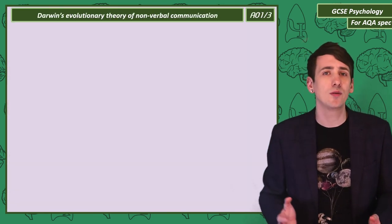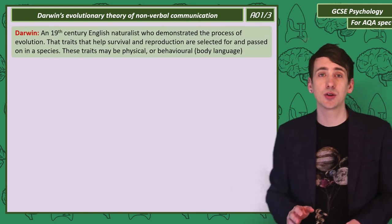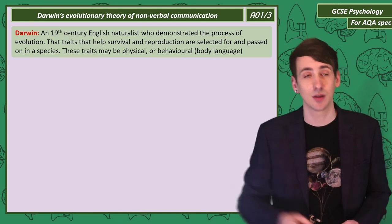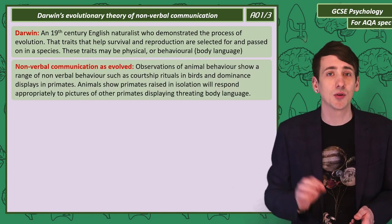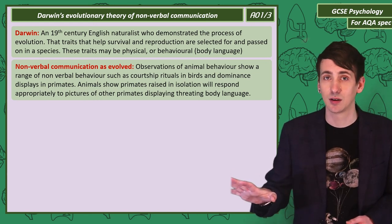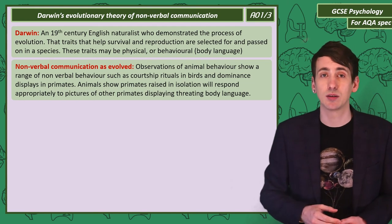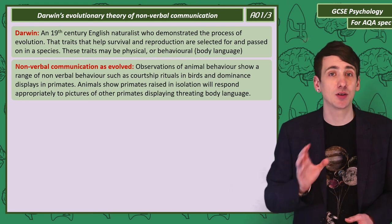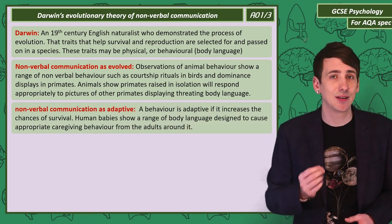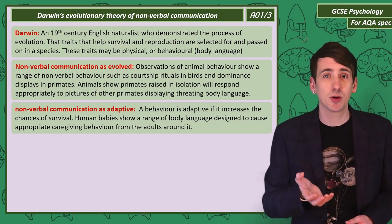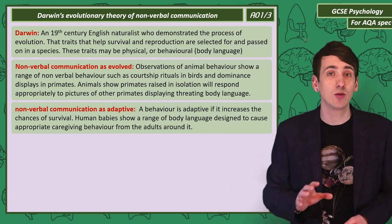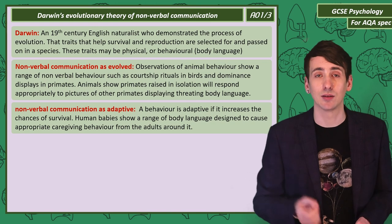Finally, we consider why we have evolved to have body language at all. Darwin argued that traits helping survival are selected for and passed on to the next generation — and psychological traits are also evolved. In animal behaviour we see nonverbal behaviour common across species, such as courtship rituals in birds and dominance displays in primates. If a social primate raised in isolation is shown pictures of threatening body language, it still responds, suggesting animals have evolved an instinctive knowledge of body language. Even in humans, babies show body language designed to trigger caretaking behaviour in adults, helping their survival.